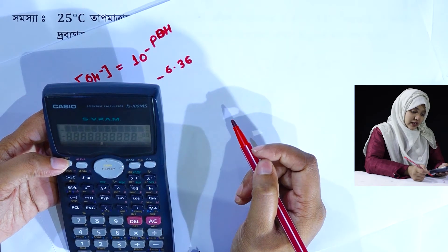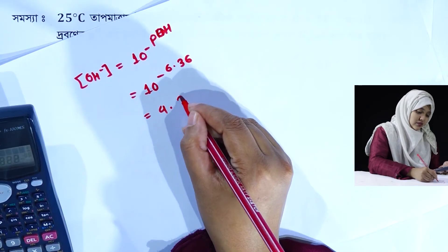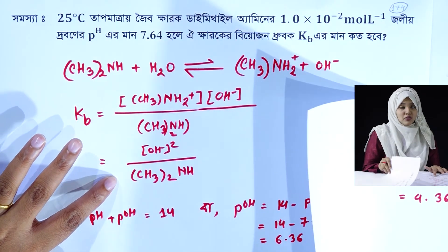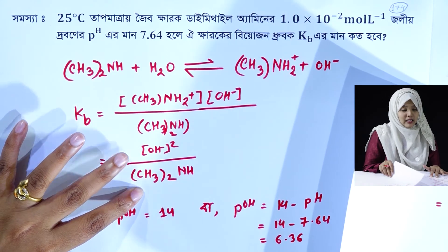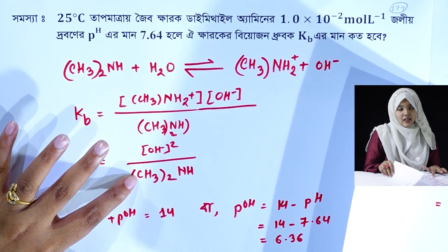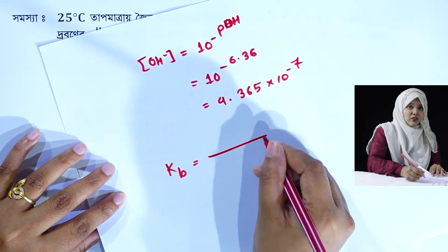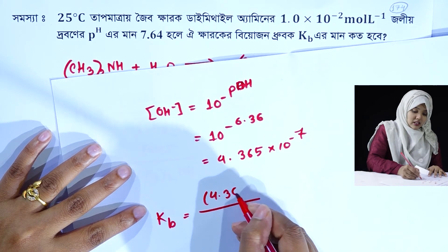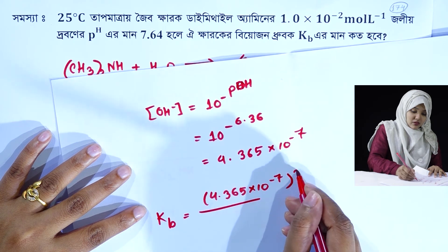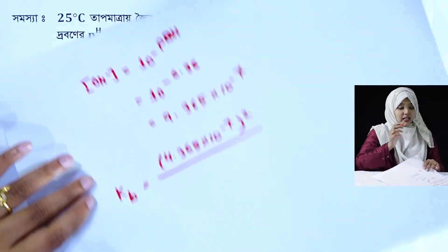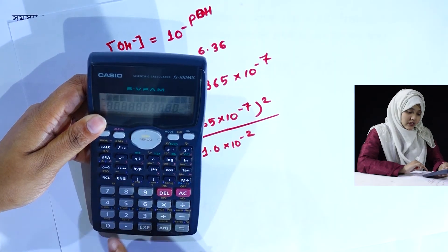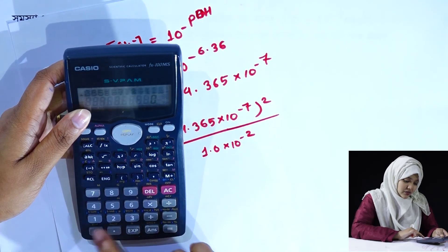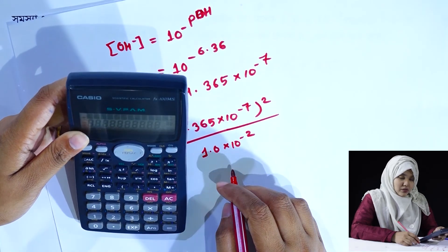4.365 into 10 to the power minus 7. We are looking at the value of Kb. Kb is equal to hydroxyl ion concentration squared: 4.365 into 10 to the power minus 7, whole square, divided by 1.0 into 10 to the power minus 2. This gives 1.905 into 10 to the power minus 11.